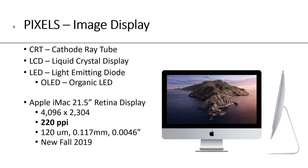Pixels per inch also refers to image display. The old technology was a CRT cathode ray tube, which led to LCD liquid crystal displays, and the most current technology is LED light-emitting diodes. The Macs we have upstairs in our labs are iMacs with 21.5-inch retina displays, which have a resolution of 4,096 by 2,304, or 220 pixels per inch. The individual width of that pixel is 120 microns, or 0.12 millimeters, or 0.5 thousandths of an inch. Those iMacs are all new as of 2019.